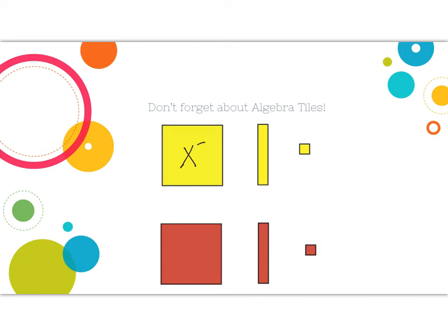This is an x squared tile. The reason we can call this x squared is that this length along the side is x and this length is x. If this length is x, that means we could also say that this length is x in this next tile. We call the side length here one, so the area of this tile is x times one, which is just simply x. Going back to this one, x times x was x squared. So x squared represents that area.